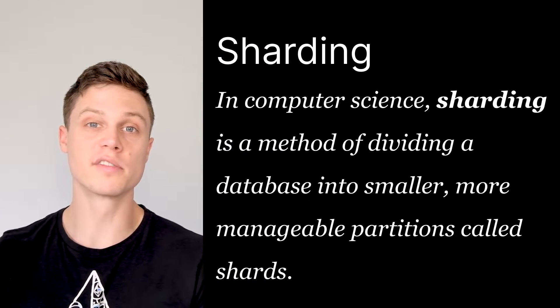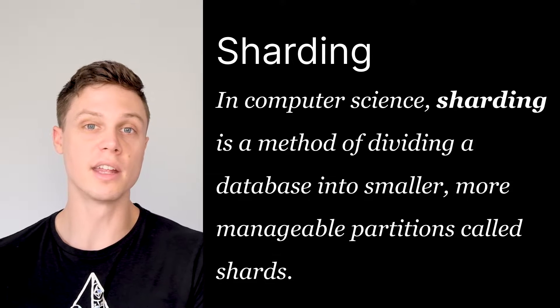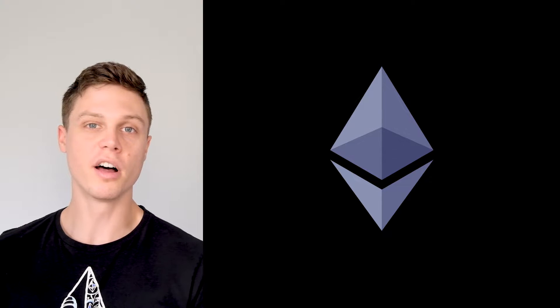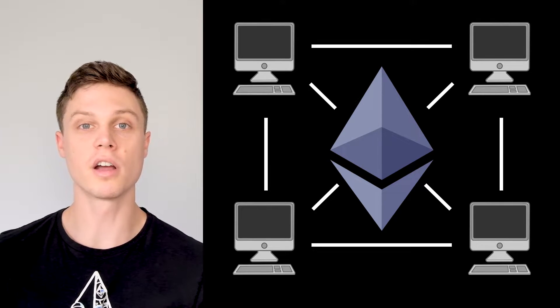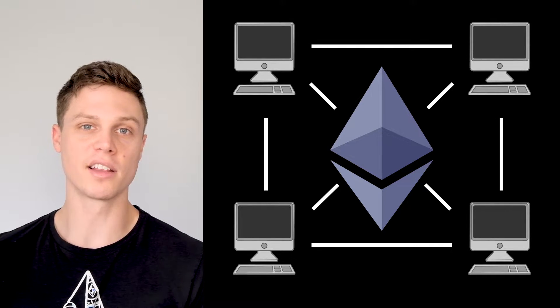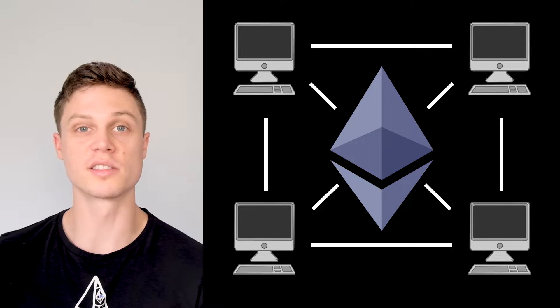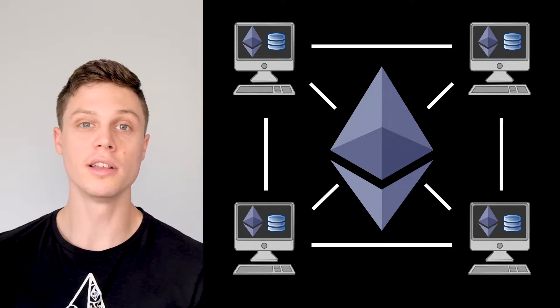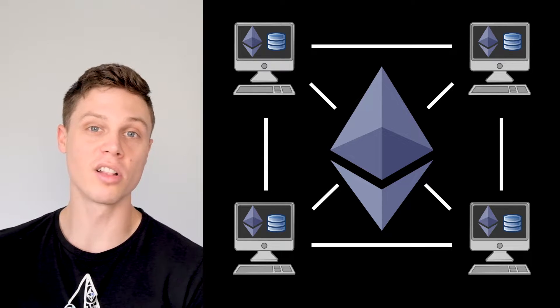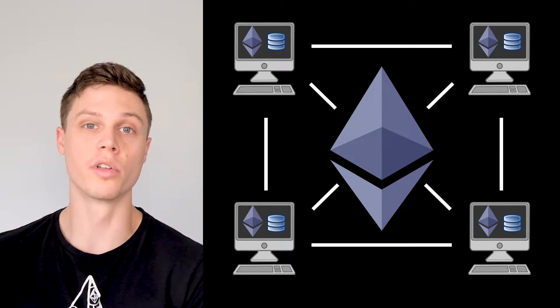In computer science, sharding involves splitting something, usually a database, to be stored across multiple resources or computers. Ethereum can be thought of as a mega computer split across a bunch of smaller computers or nodes. But there is a catch — instead of data and computation being split across all of these nodes, every single node needs to store the entire Ethereum transaction history and execute every single line of code that runs through Ethereum. So every time new data is stored in an Ethereum transaction, it's actually being stored thousands of times over across all of these nodes.